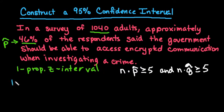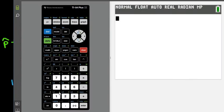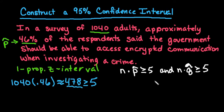We're going to check to make sure that 1040 times 0.46 is greater than or equal to 5, and this gives us 478 approximately. I just rounded to the nearest whole adult because we're talking about people and I can't have a partial person. Even though when I plug it in my calculator, 1040 times 0.46 gives me 478.4, I can't have a partial person so I round to the nearest whole number.